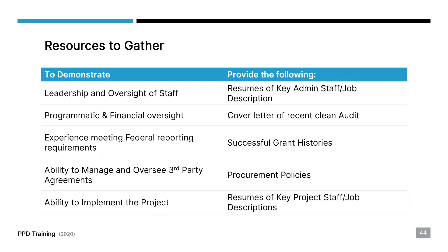Now is the time during your planning to collect key things to demonstrate your organizational capacity. These are the resources to start gathering: to demonstrate leadership and oversight of staff, collect the resumes of key administrative staff, or if you're going to be hiring for those positions, include a job description demonstrating that the person will need certain qualifications, background, and credentials.